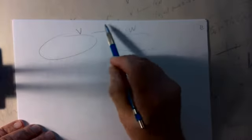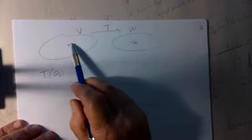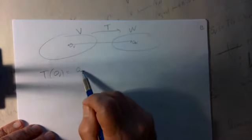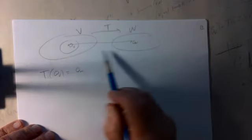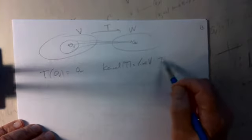Here's a picture: vector space V, vector space W, and the linear function between them. The zero vector in V always gets sent to the zero vector in W, but other vectors can also be sent to zero. The kernel of the linear operator T is all vectors v in V such that T(v) = 0. On the other hand, not every vector in W comes from some vector in V.